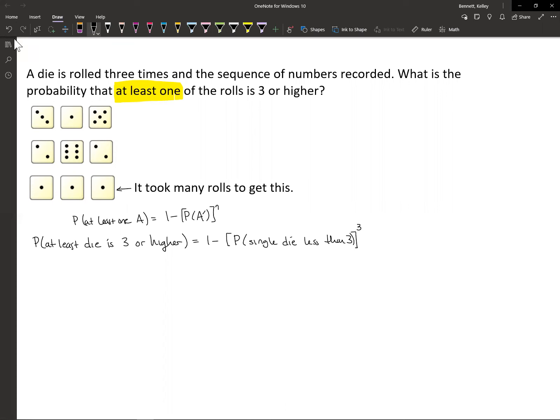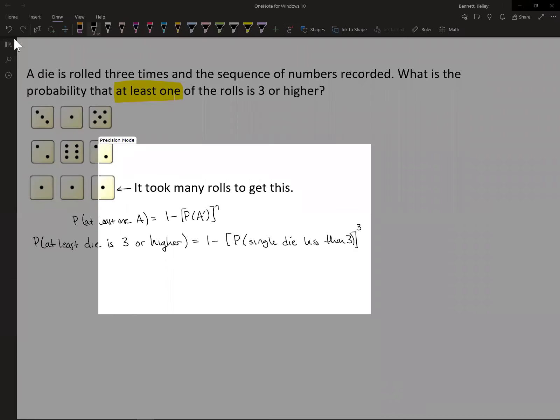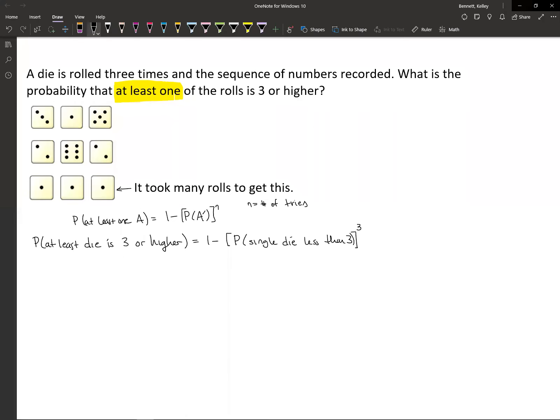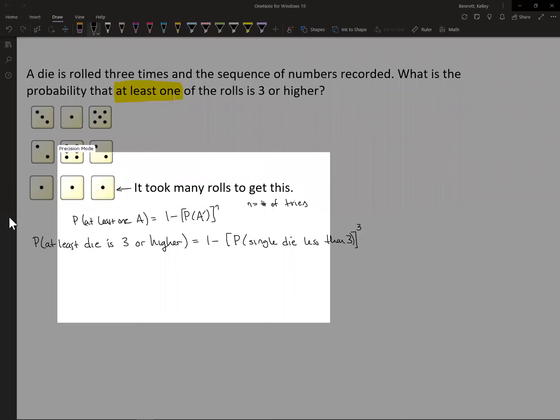n is the number of events, or I'll write it as the number of tries in this case. For us, we're rolling the die three times. So for us, that's why n is three. Getting at least one A—so for us, A is going to be three or higher, meaning three, four, five, or six.